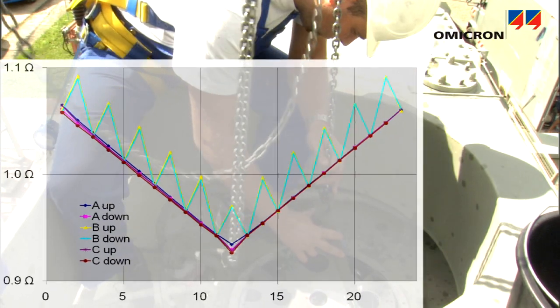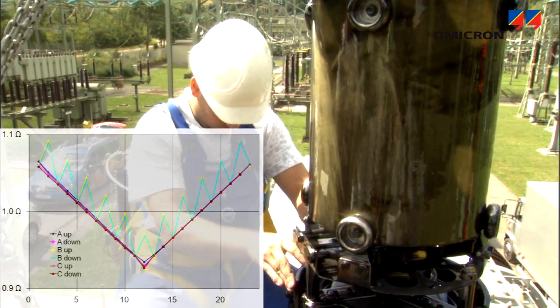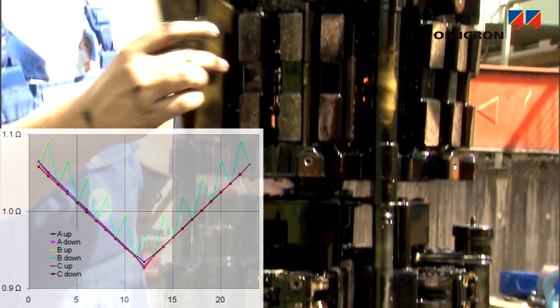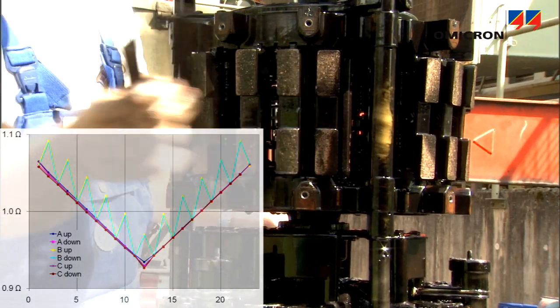Results indicate when to clean or replace the tap changer contacts, or when to replace or refurbish the tap changer, which has a shorter lifespan than the active part of the transformer.